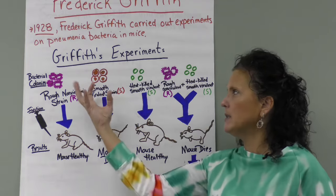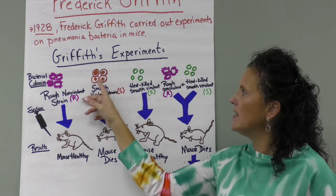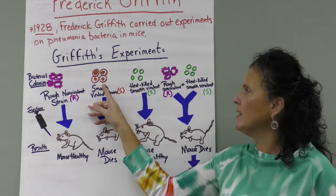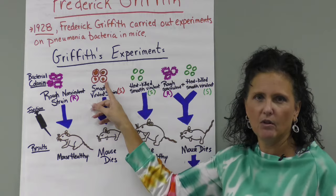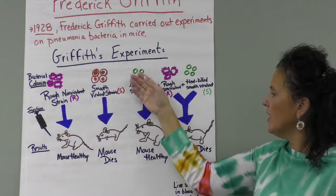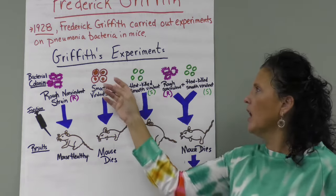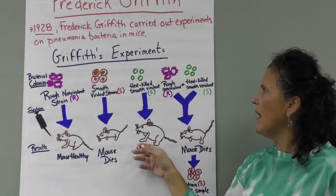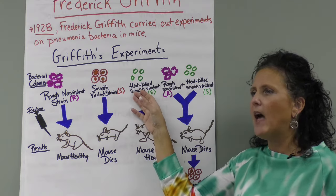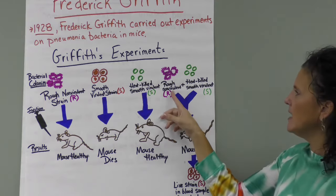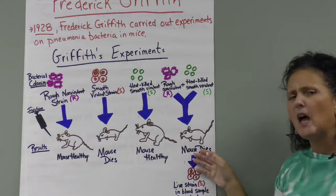To figure out what part of the bacterium was disease-causing, he heat-killed the smooth bacteria. Just as you wash your hands with hot water to kill bacteria, subjecting them to heat kills the outer coat. He then injected the heat-killed bacteria into a mouse, and the mouse was still healthy. So he then took the rough non-virulent strain and the heat-killed virulent strain together and injected them into a mouse — this time the mouse died.